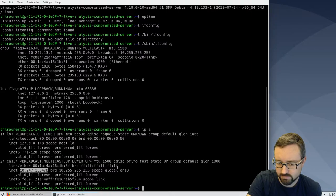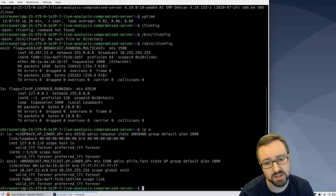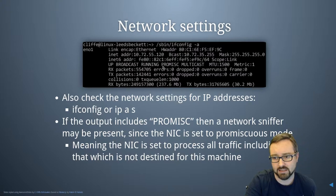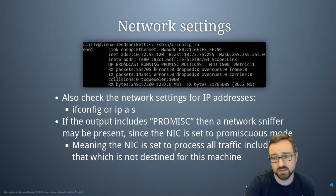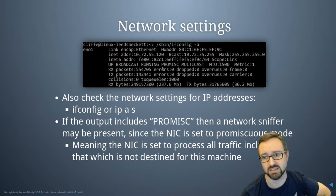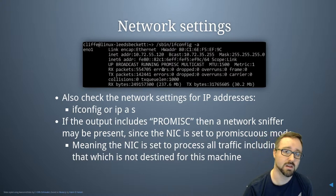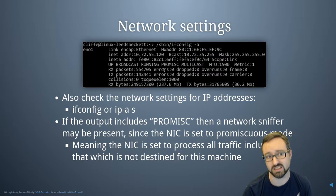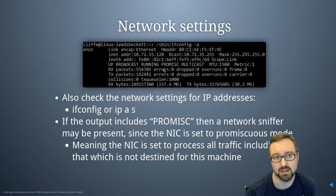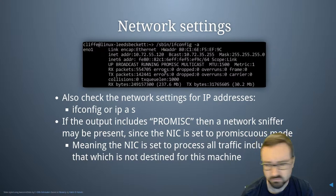One of the reasons we want to look at the network interface is to check the flags. If you see `PROMISC` listed, that indicates the network interface is in promiscuous mode, which is suspicious — it wouldn't normally be the case unless the system was trying to monitor network traffic. If you start a network sniffer, for example, it will typically set the NIC to promiscuous mode, meaning it will receive and process all packets on that network segment.